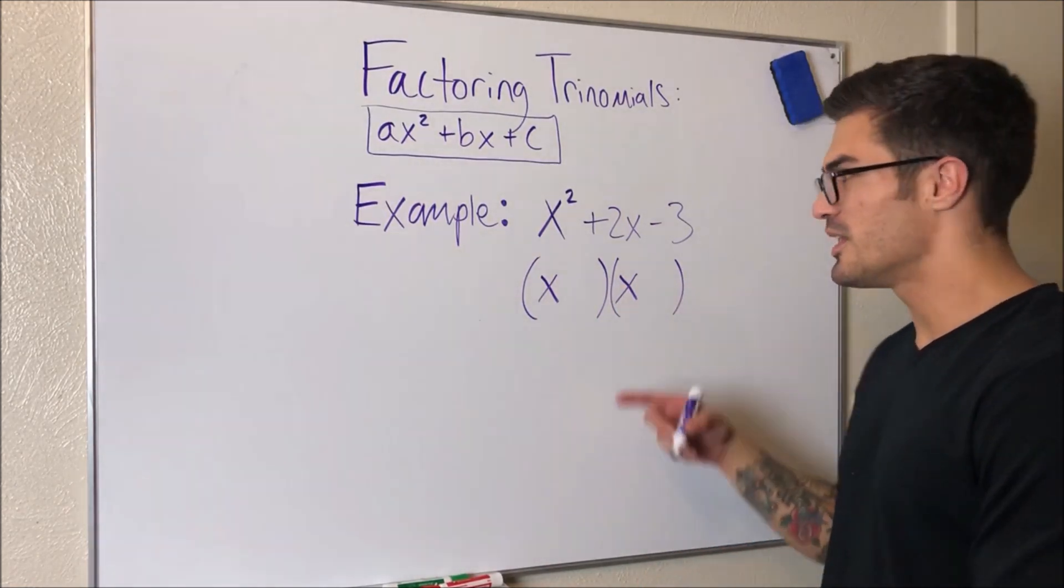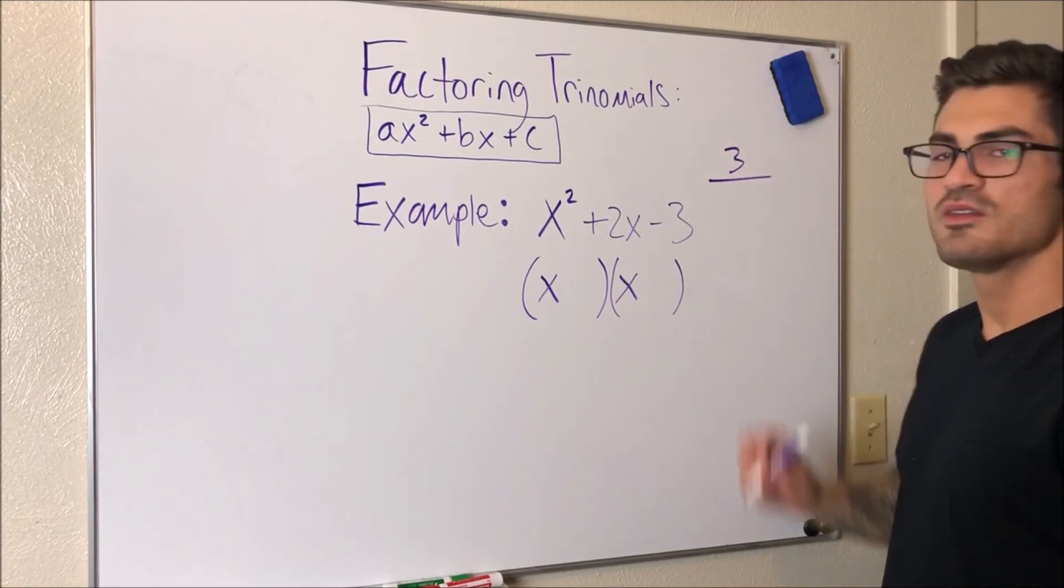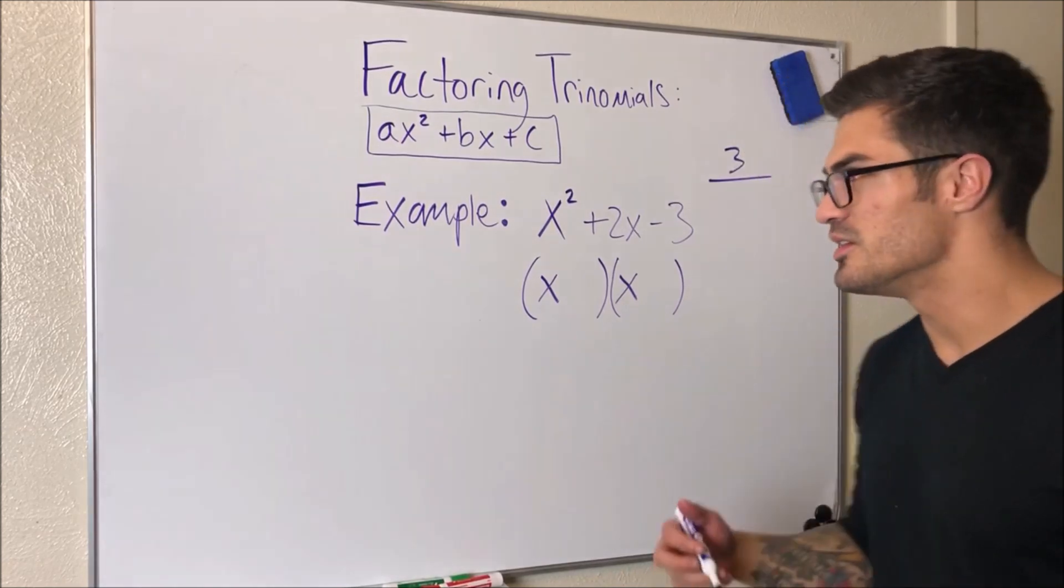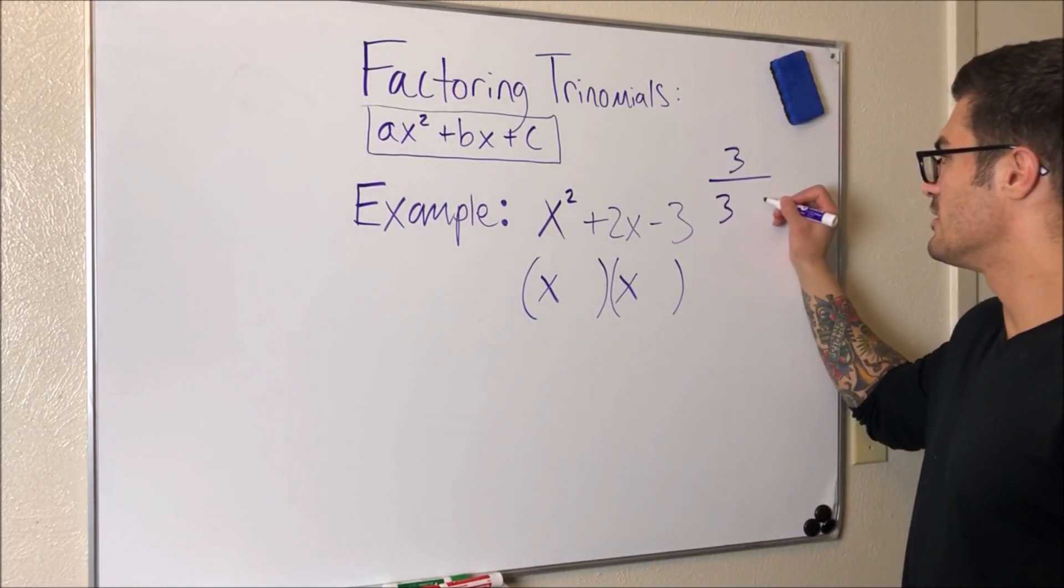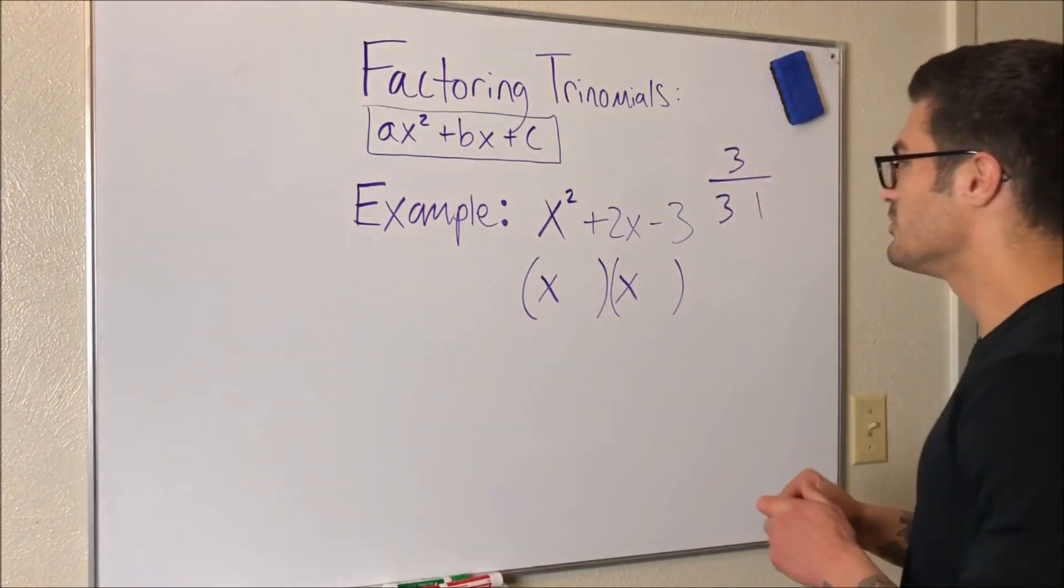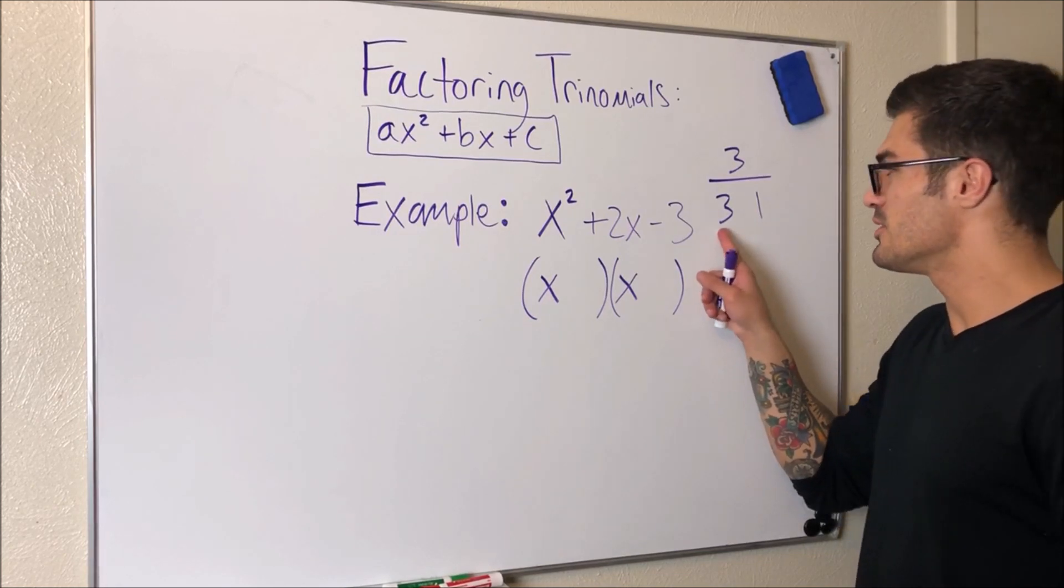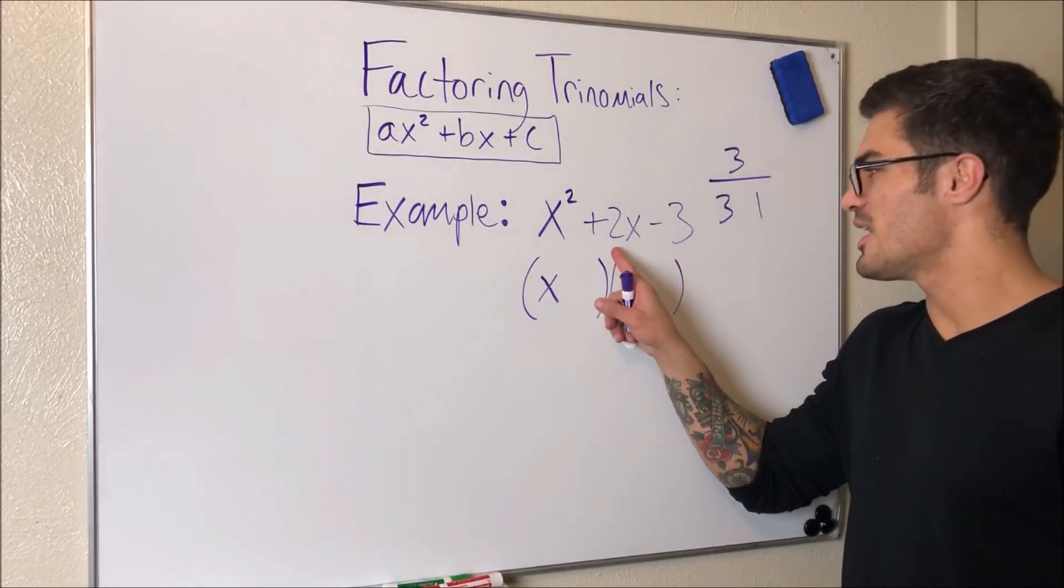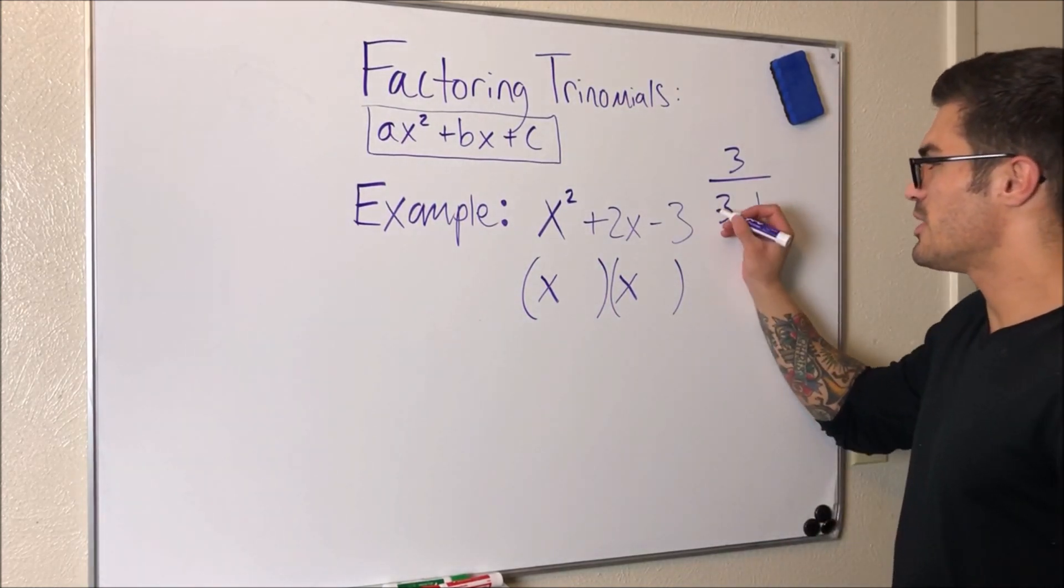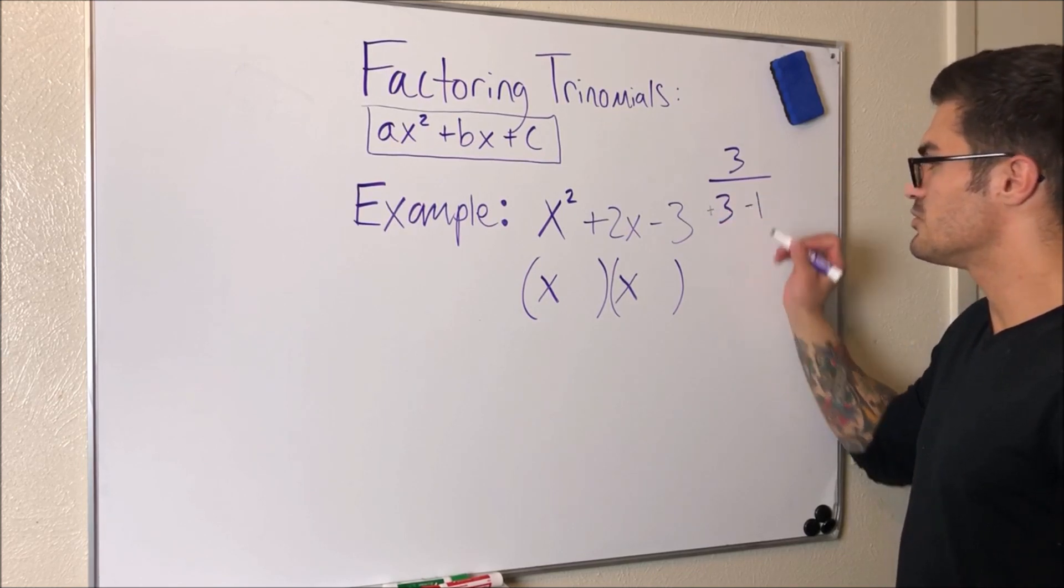And that's where we use that multiply-add method. So I'm going to go ahead and write the three here and write all the numbers that multiply together to get three. So in this case, it's only three and one. So this is a very simple case. So what I'm looking to do is arrange these in a way where they multiply together to be negative three and add together to be positive two.